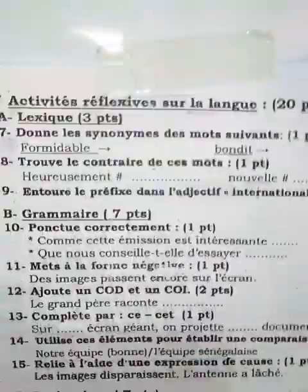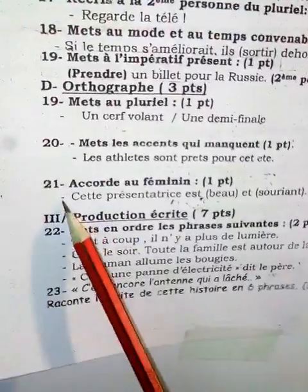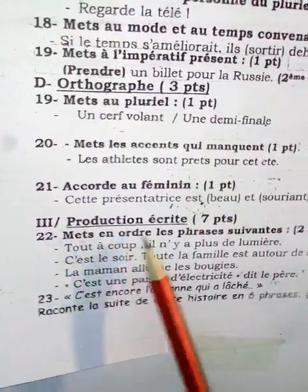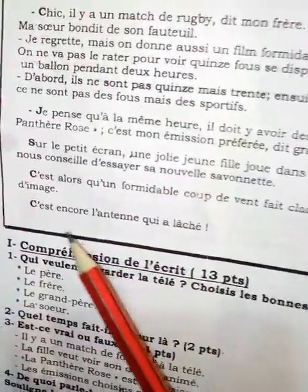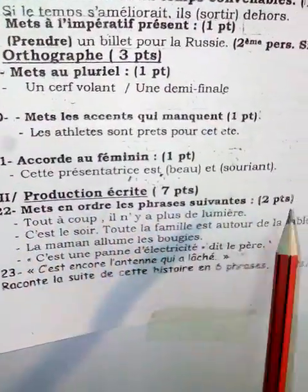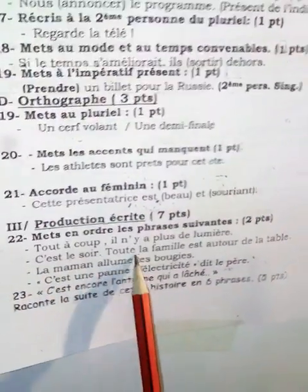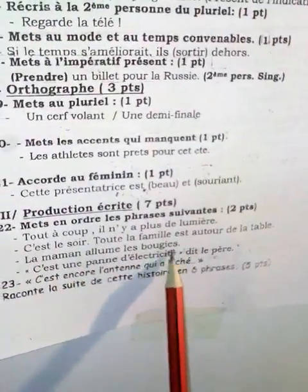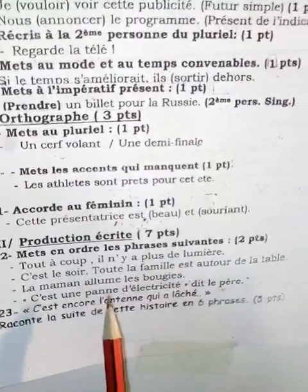J'ai essayé quand même de vous expliquer les questions. Mais dans la vraie évaluation pratique, on va seulement lire les questions mais pas les expliquer. Nous avons maintenant la production écrite où vous avez deux exercices. Le premier exercice : mets en ordre les phrases suivantes. Tout à coup, il n'y a plus de lumière. C'est le soir, toute la famille est autour de la table. La maman allume les bougies. C'est une panne d'électricité, dit le père. Vous remarquez que nous avons quatre phrases que vous devez mettre en ordre.